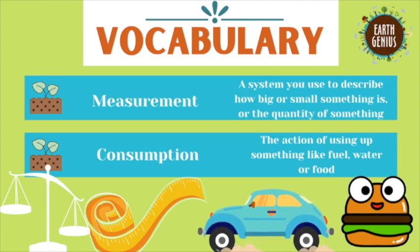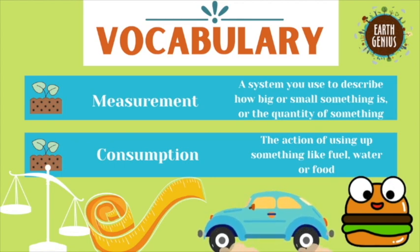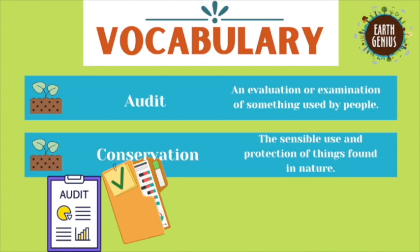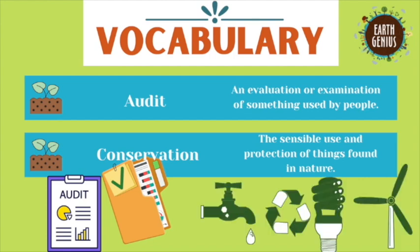Our next word is consumption. This word is derived from consume and means you eat it or use it up. Our next word is audit — an evaluation or examination of something used by people. For example, people will perform an audit when they want to measure how much something is being consumed. Our final word is conservation, meaning the sensible use and protection of things found in nature. It is important that we preserve natural resources so you will have enough for the future.